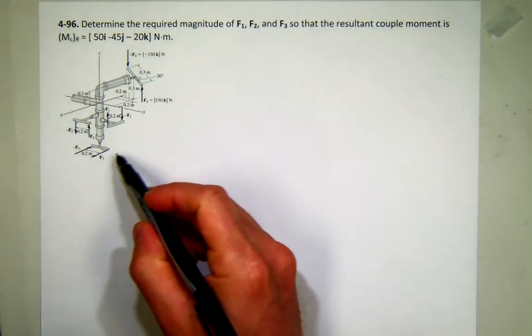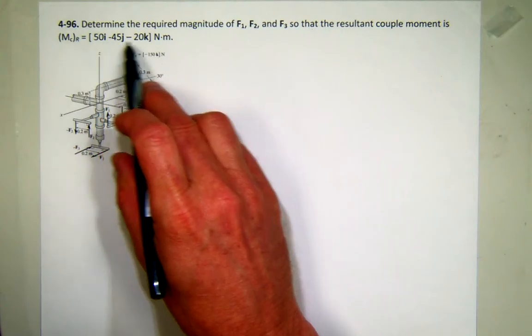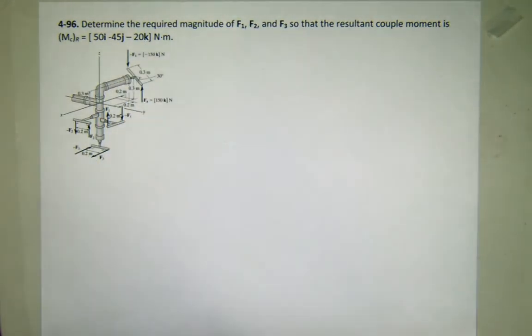So we should be able to, we have three components, X, Y, and Z, and we have three unknowns. So we should be able to form three equations and three unknowns.